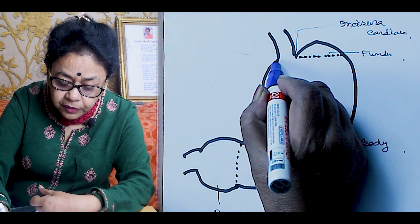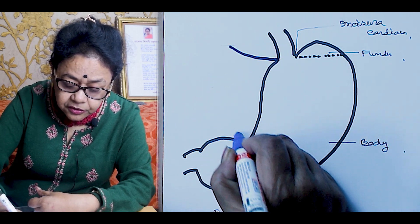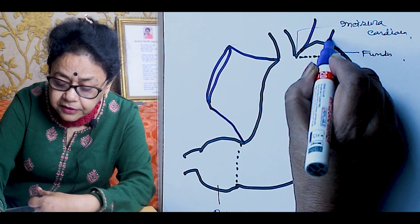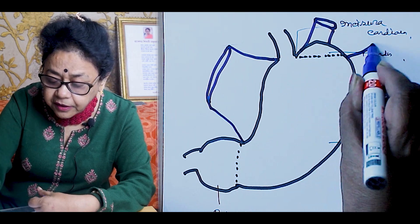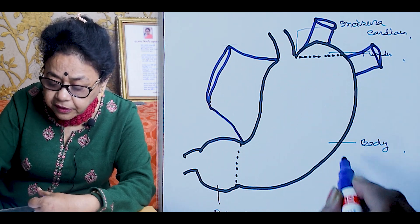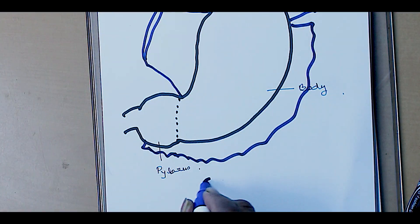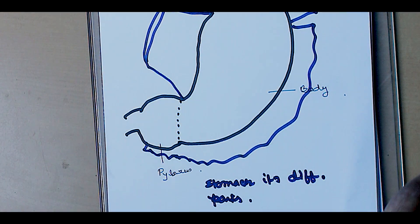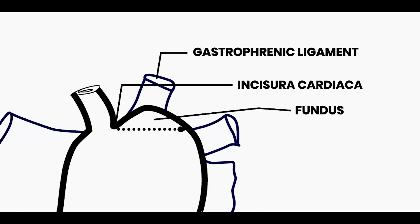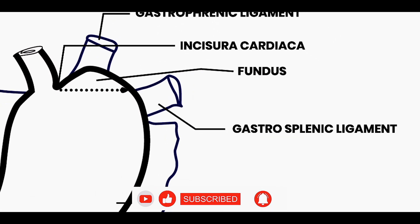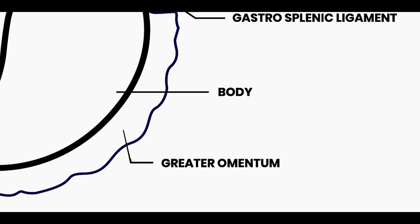Now, what are the ligaments attached to the different curvatures of the stomach? At the lesser curvature, there is the lesser omentum. At the greater curvature, there is the gastro-phrenic ligament, the gastro-splenic ligament, and the anterior two layers of the greater omentum. You should label here: the gastro-phrenic ligament, the gastro-splenic ligament, the greater omentum, and the lesser omentum.